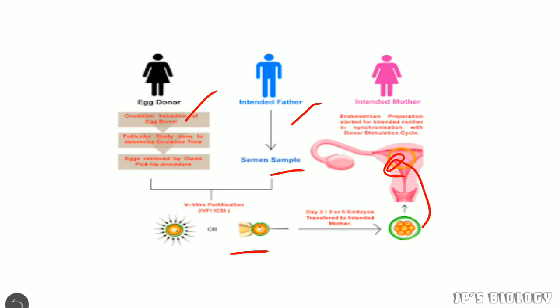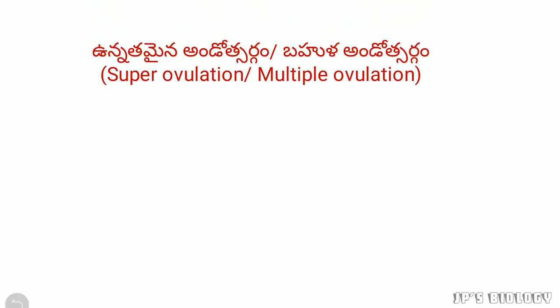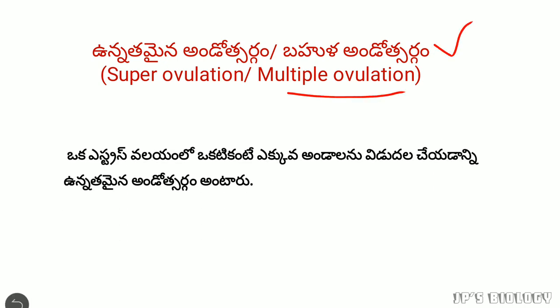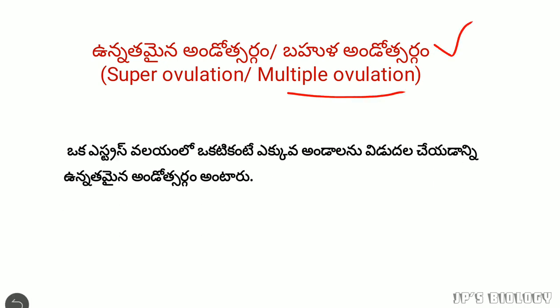This is an in-vitro fertilization technique. In super ovulation, there are multiple ovulations. This is an in-vitro fertilization technique, and the first step is to do super ovulation.